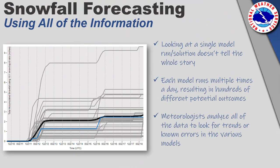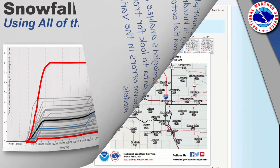So what does this all mean? For any single weather event, there are likely hundreds of different potential outcomes that computer models produce. By looking at a single model solution — perhaps one that you've seen on social media or through a conversation with a coworker — you aren't getting the whole story and may be referencing an extreme or unlikely scenario. This is where our jobs as meteorologists come in: to sort through all of the data, look for trends, and weed out solutions we know typically produce higher errors.